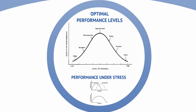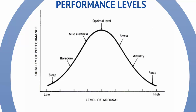We each have individual personalities, so our reactions to events and our emotional responses are very different and can also vary within one individual. We each have what we call an optimal performance level — there's an optimal level of stress needed for best performance in any event, whether it's athletic, academic, or otherwise. The point of optimal stress varies for each individual and can vary within that individual.